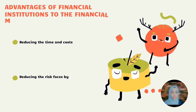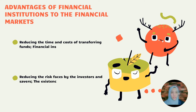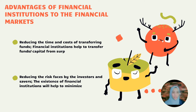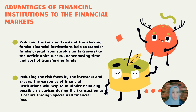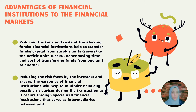Advantages of financial institutions to the financial markets. Number one, reducing the time and cost of transferring funds. Financial institutions help to channel funds or capital from surplus units to the deficit units, saving time and cost of transferring funds from one unit to another. Number two, reducing the risk faced by the investor. The existence of financial institutions will help to minimize any possibilities of risk arising during the transaction as it occurs through specialist financial institutions that serve as intermediaries between units involved.